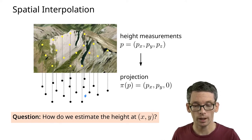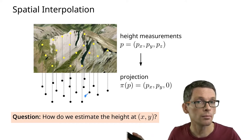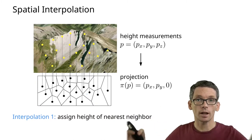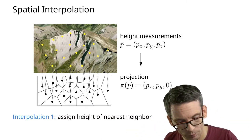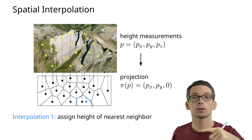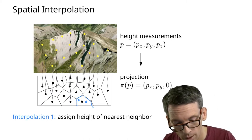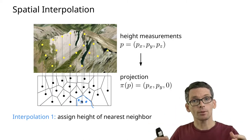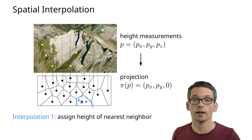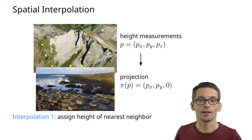One option would be to say: let's see which of my measurements is closest. So let's say this one is closest — maybe that's my best guess. So let's give this point x, y the height of that measurement. That means I will subdivide my plane into cells such that within each cell, if I take any point, the closest measurement is the same. This point has the same closest measurement as this point, namely this measurement here. This subdivision is actually the Voronoi diagram, and the terrain we'd get from this would look something like that.